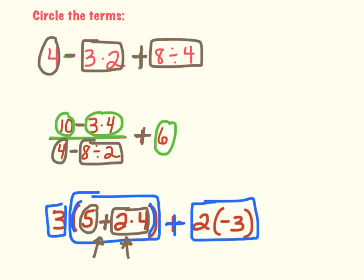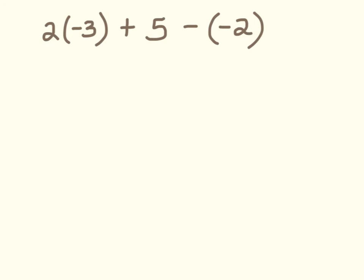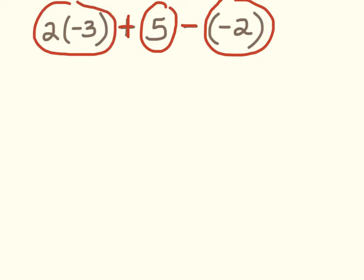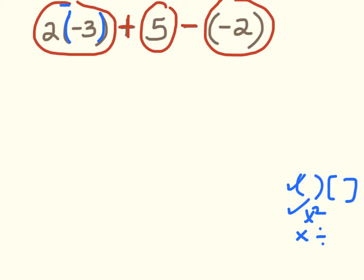Now I'll show you what it looks like when we actually solve a problem. First I identify my adding and subtracting signs, then circle my terms. Checking order of operations: first, any grouping symbols? I see parentheses but there's nothing to do inside — it's just telling me that's a negative 3. So I move on. Any exponents? Nope. Next is multiplying and dividing from left to right. I see multiplying, so I'll do 2 times negative 3, which gives me negative 6. I write that right below it and rewrite what I have: negative 6 plus 5 minus negative 2.